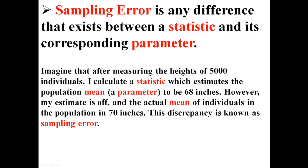For example, imagine that after measuring the heights of 5,000 people, I calculate a statistic which estimates the population mean to be 68 inches. However, my estimate is off, and the actual mean of individuals in the population is 70 inches. So I estimated it to be 68, but it's actually 70. There's a 2-inch difference there. That discrepancy is known as sampling error.